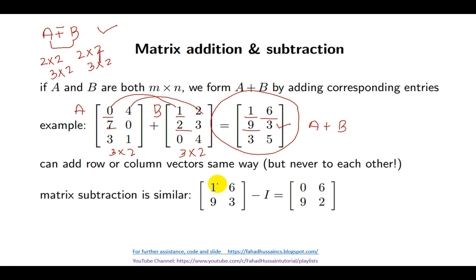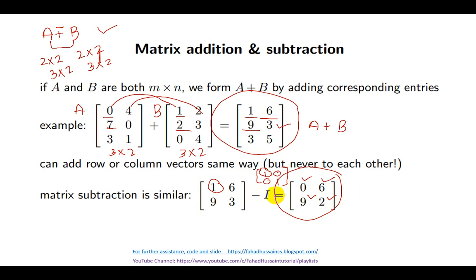Similarly, let's understand subtraction. For the identity matrix example shown here, the 2 by 2 identity matrix is written as 1, 0, 0, 1. Performing element-wise subtraction: 1 minus 1 equals 0, 6 minus 0 equals 6, 9 minus 0 equals 9, and 3 minus 1 equals 2. So this is the resulting matrix after subtraction — using the identity matrix I written as 1, 0, 0, 1 — and applying the same element-wise subtraction. The result is matrix A minus I.